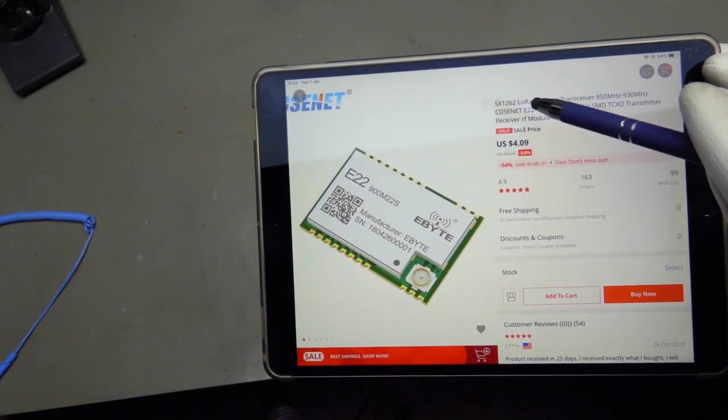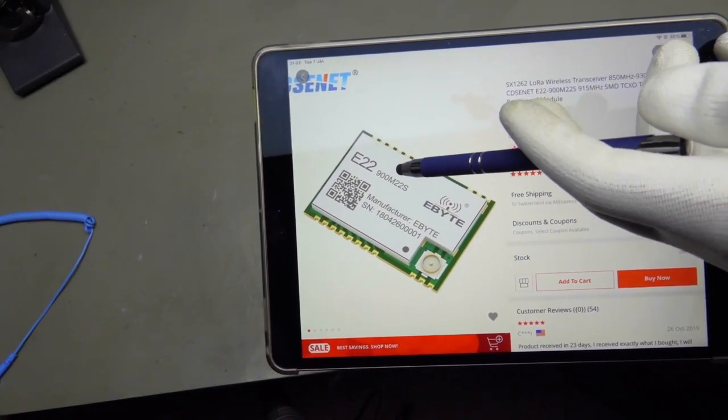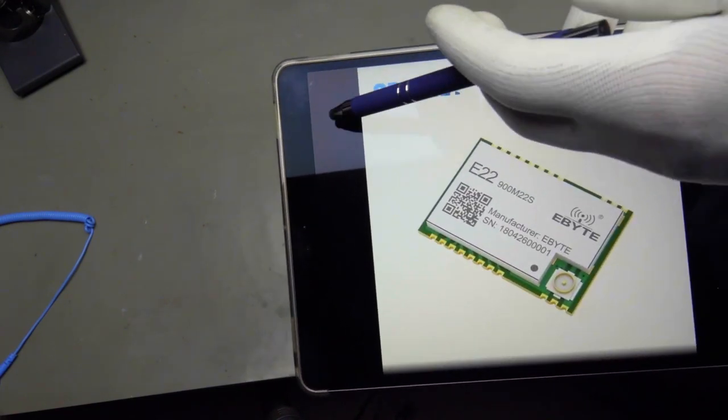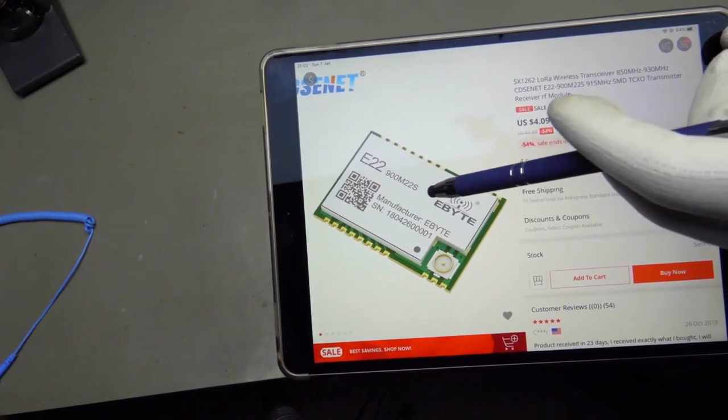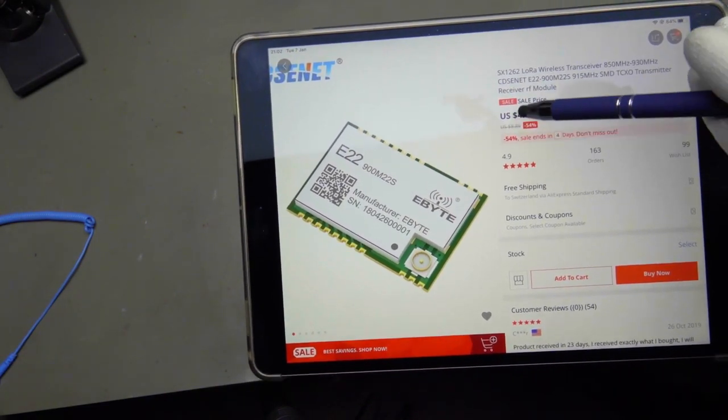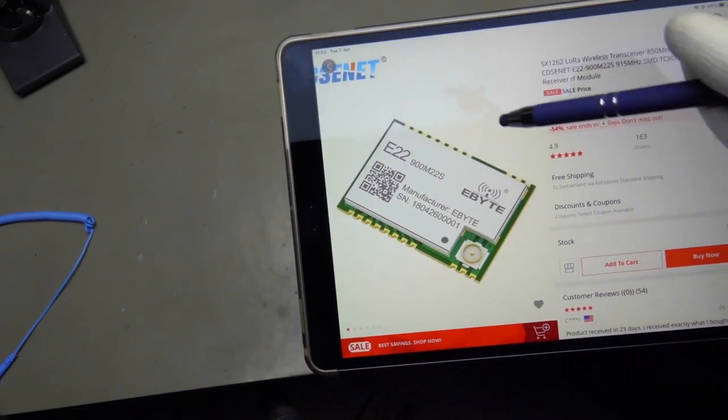By the way here you have the listing of the 900M22s which is the legal one with 22 dBm output power. And this one is even cheaper, it's $4. It looks very similar. But I think it is smaller.